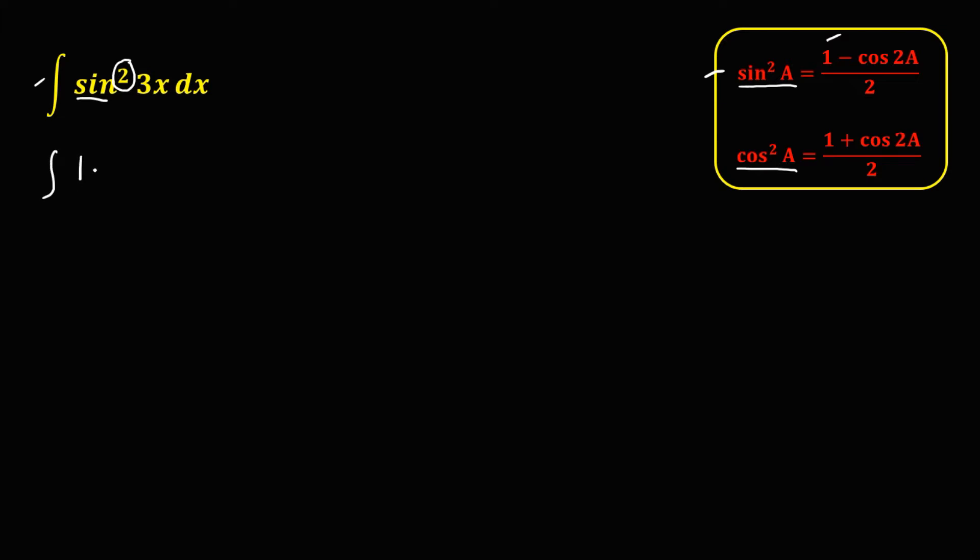So we have 1 minus cosine 2a, and a, that's the angle, 3x. So we have cosine 2 times 3x, then over 2, dx.